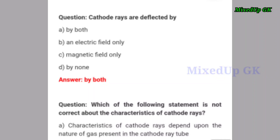Next question: cathode rays are deflected by — option A: by both electric field and magnetic field. Option B: electric field only. Option C: magnetic field only. Option D: by none. The correct answer is option A — by both electric field and magnetic field.